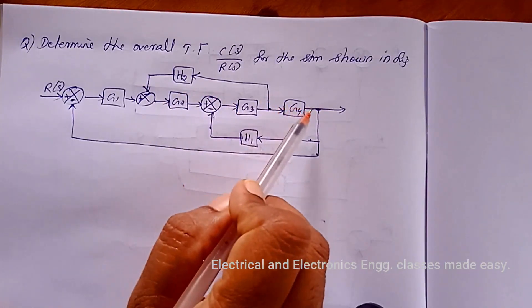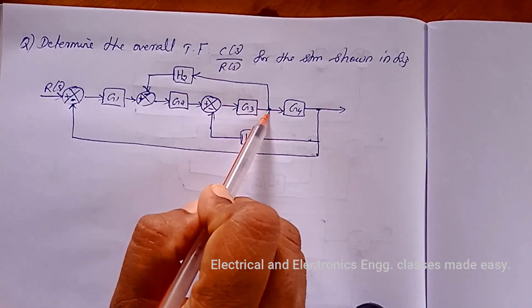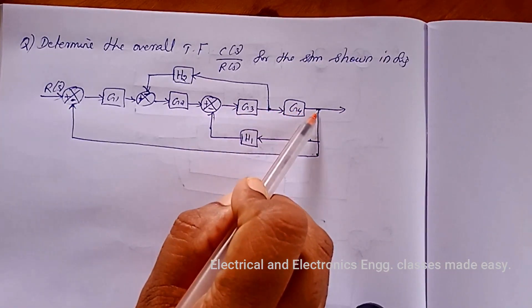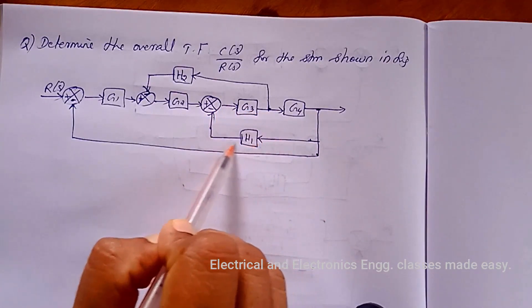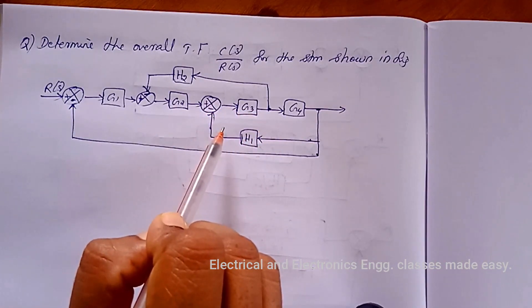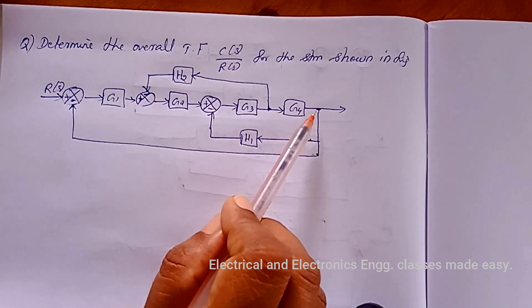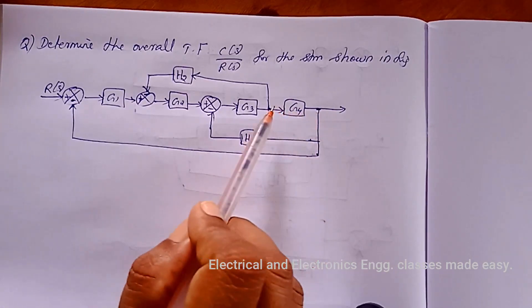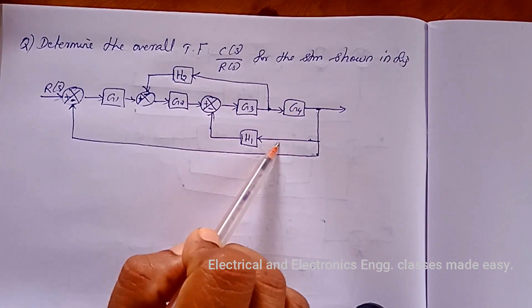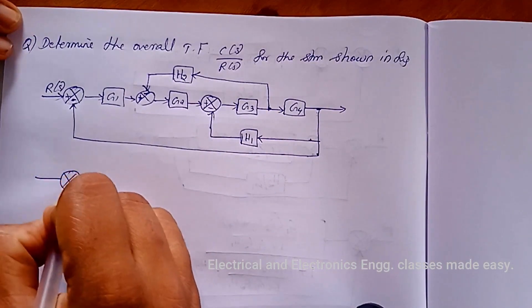Let us change this branch point to this side. When we change this branch point to this side, we will get one single feedback path. When we move this branch point before the block, we have to add a block with the same transfer function.